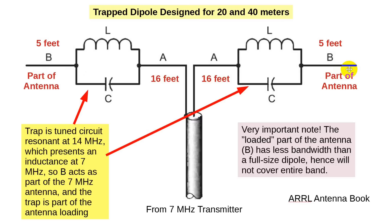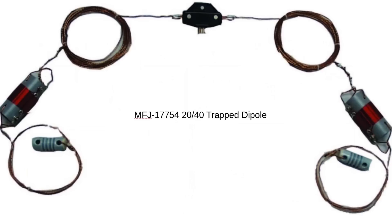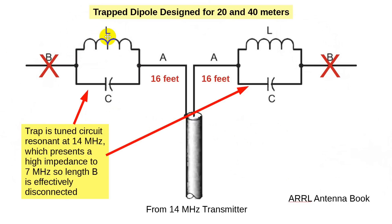A 40-meter dipole is normally 66 feet long, so this is a way to shorten an antenna. The problem is that when you put inductive loading into an antenna, the antenna has less bandwidth than a full-size dipole. It won't cover the entire band. That is in fact the problem with the MFJ 17754 — it works great on 20, but only covers about half of 40 because of this loading.